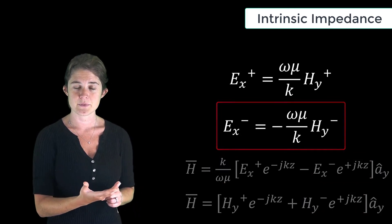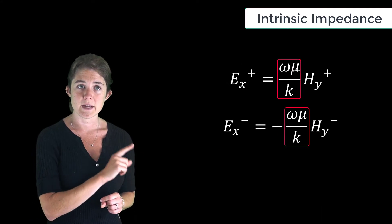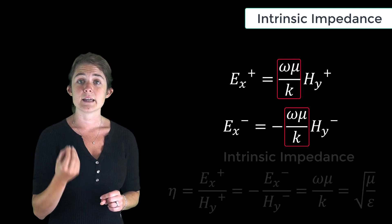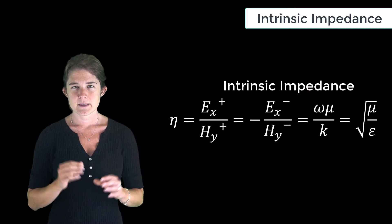We will define this coefficient ωμ/k as the intrinsic impedance of the wave. Think of this as being analogous to the characteristic impedance on a transmission line.